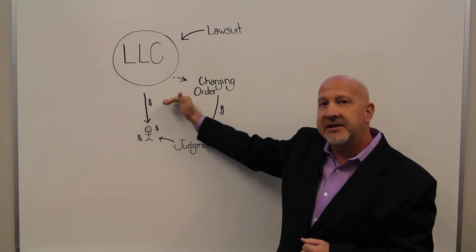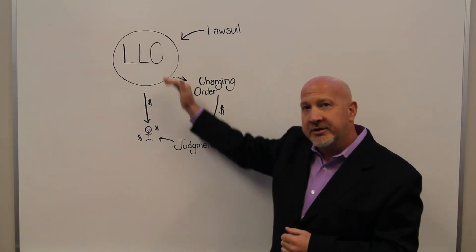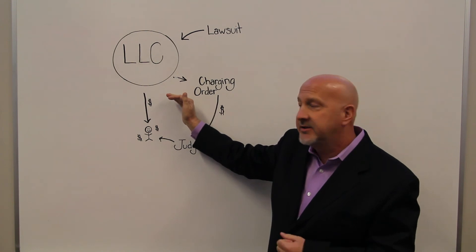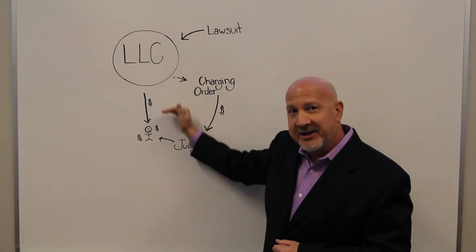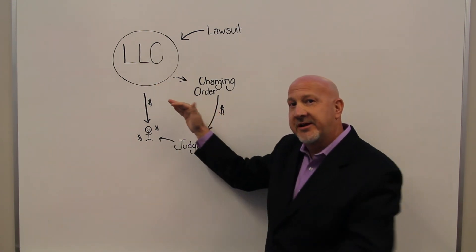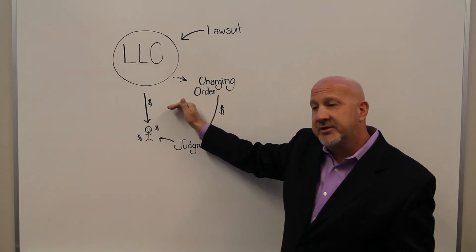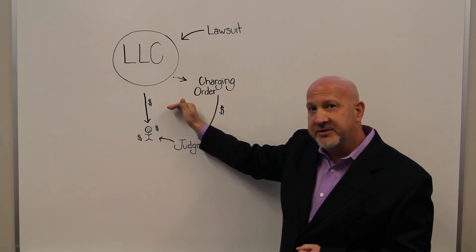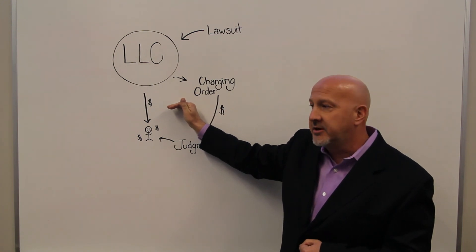What that does is it leaves you at a stalemate with the judgment creditor, where you really can't take your money out where you need it to use it, but they can't get to it either. So you're both at a stalemate. That puts you in a position where you're probably in a better position to settle it out, or just wait them out until their judgment is gone.